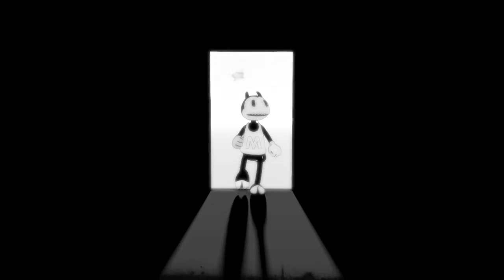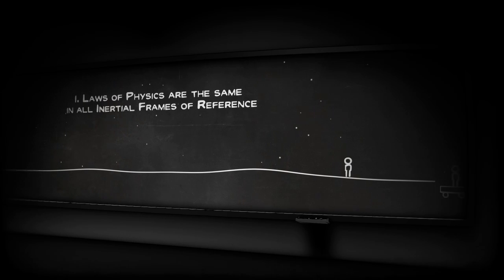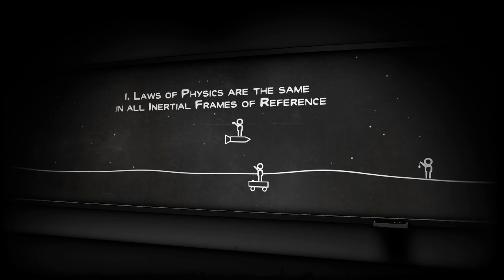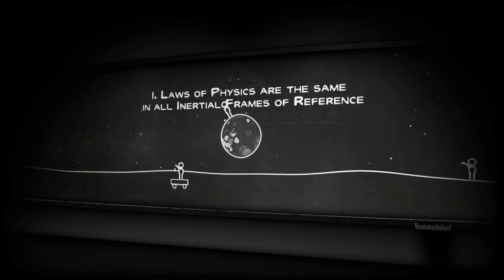Special relativity is based on two principles. The first principle is that laws of physics are the same for all freely moving observers, no matter what their speed.